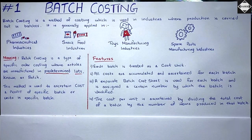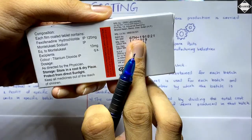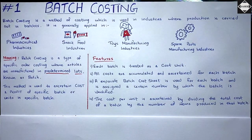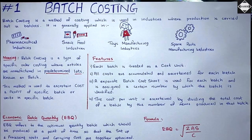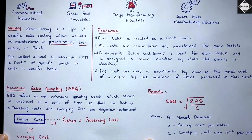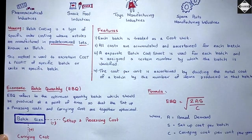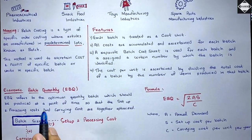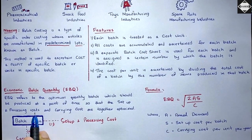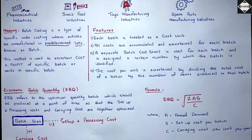There is one more important concept in batch costing: Economic Batch Quantity, or EBQ. The company has to decide beforehand how much to produce in one batch, and that number must be economical. EBQ refers to the optimum batch quantity which should be produced at a point in time so that setup and processing costs and carrying costs are together optimized and minimized.